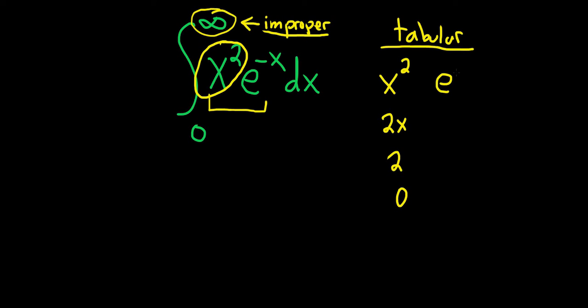Then you write down the other piece and you integrate it. Whenever you integrate e^(-x), all you have to do is divide by negative 1. So you just keep dividing by negative 1. So when you do it the first time, you get -e^(-x). Do it again, it'll become positive. Do it again, it'll become negative.